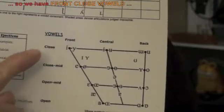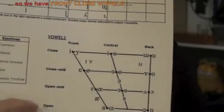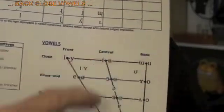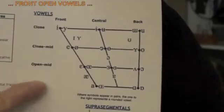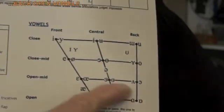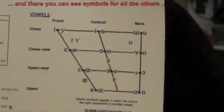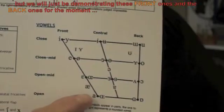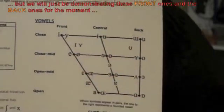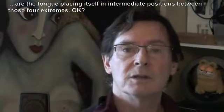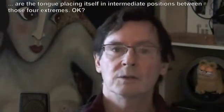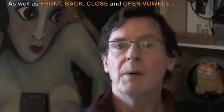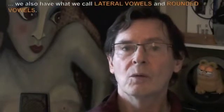So we have front close vowels, back close vowels, front open vowels, back open vowels. You can see symbols for all the others, but we will just be demonstrating these front ones and the back ones for the moment, because all of the others are the tongue placing itself in intermediate positions between those four extremes.